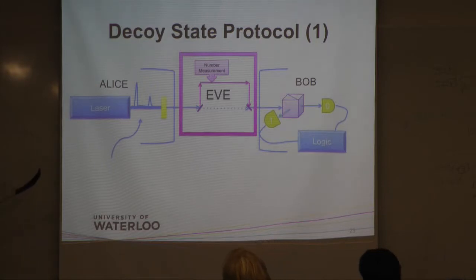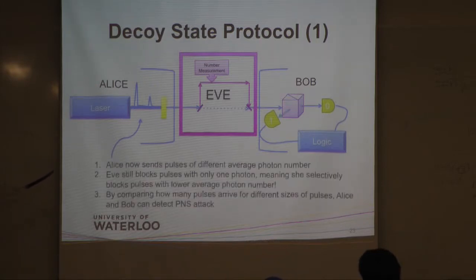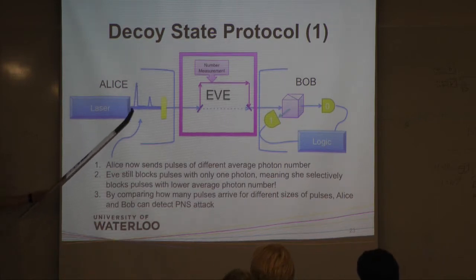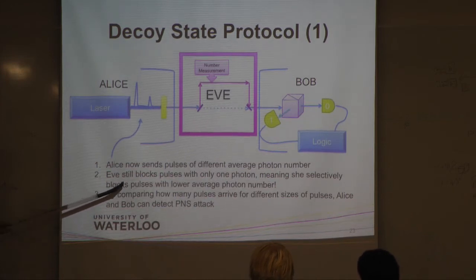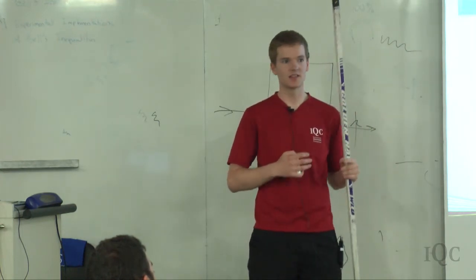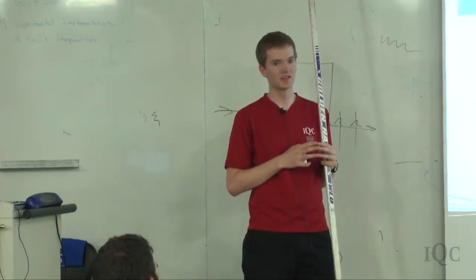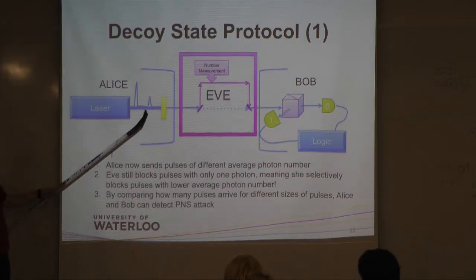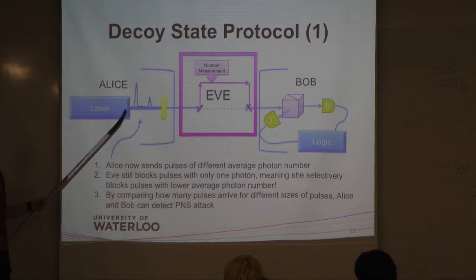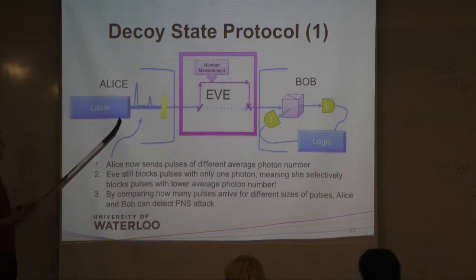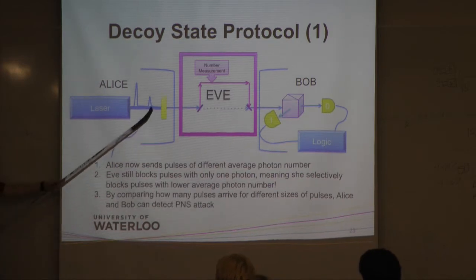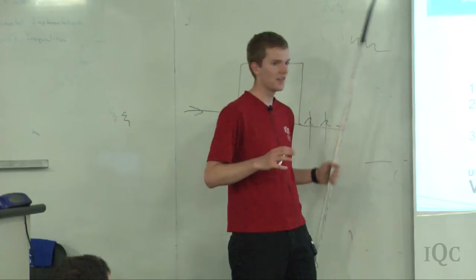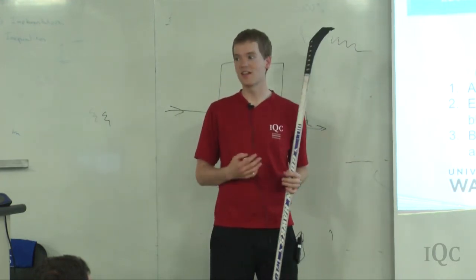So there's a really nice invention called the decoy state protocol. So instead of just sending the same average photon number, the same strength of pulse, Alice now sends both signal pulses and decoy pulses. So the decoy pulses are meant to catch Eve doing this attack. So Eve still blocks the pulses with only one photon, and that means she's going to preferentially block the pulses that are slightly smaller, because they're more likely not to have two photons. So Eve's going to preferentially block these decoy pulses, preferentially allow these signal pulses, and of course it's all probabilistic, but once the statistics are done, then you can see that more of these are blocked than these. So essentially Alice and Bob just have to compare how many pulses arrive for these decoy ones versus these signal ones, and if they see they're not the same at all, there must be someone blocking the single photon pulses. So now they know that the attack's occurring.